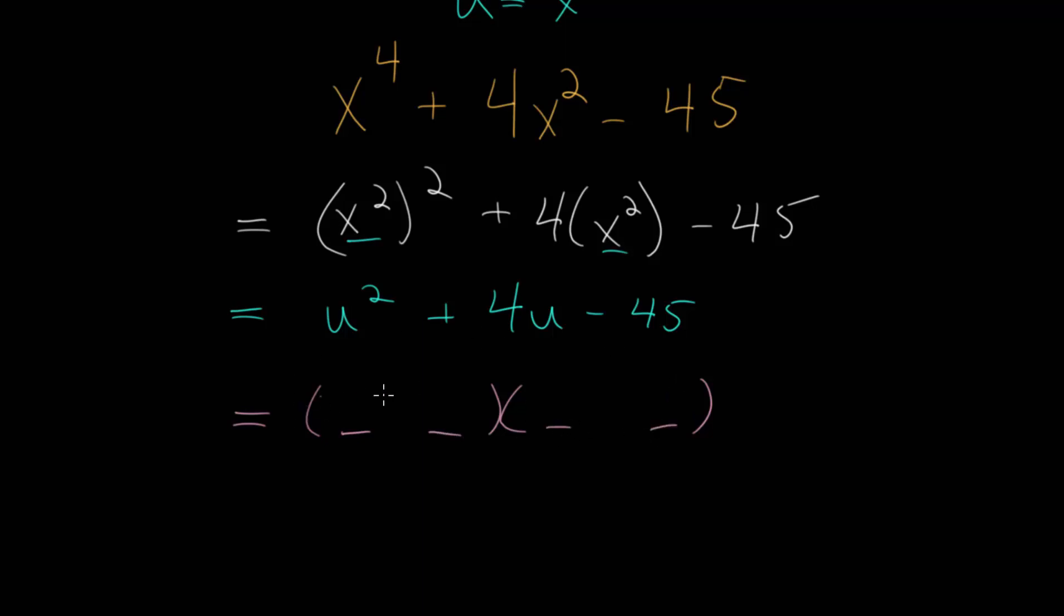We know the first terms each have to be u, since u times u is u^2, and the coefficient on this is 1. Then these two terms will be constants, and they will multiply to give us -45.